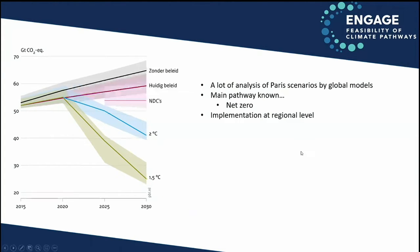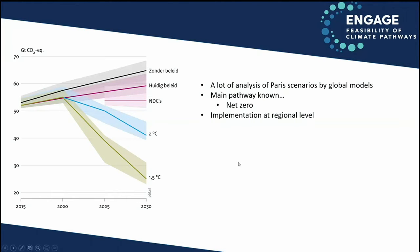Helene was already indicating that if we do this analysis with global models, we find that the NDCs, if you implement them and add them up for all countries, don't reach the level needed for 2 degrees or 1.5 degrees. Even worse, current policies globally don't reach the NDCs. So there is an implementation gap — we're not implementing the NDCs yet. There's also an ambition gap: the NDCs are not ambitious enough yet to be leading to the Paris targets.